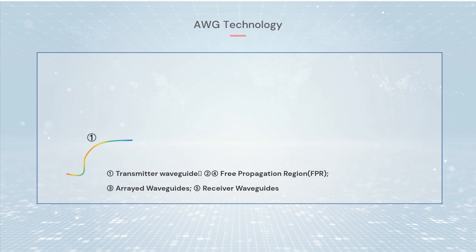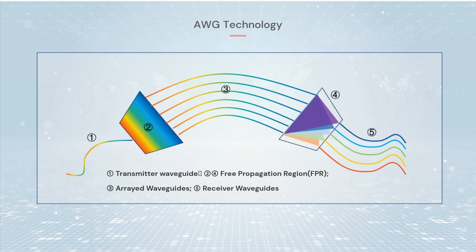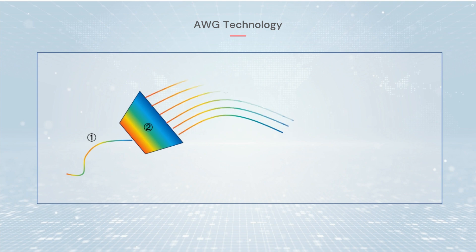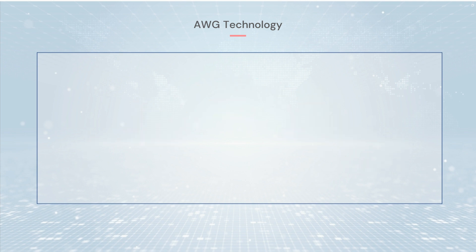AWG is an arrayed waveguide grating fabricated on a chip substrate using PLC technology, through a planar wavefront beam splitter on an optical fiber to multiplex and separate optical signals of different wavelengths. The signals emit from the transmitter waveguide and are separated into the arrayed waveguides after free propagation. The arrayed waveguides generate phase differences between the multiple optical beams, and different wavelengths are dispersed and then focused at different positions in the output free propagation region, thus realizing parallel demultiplexing of DWDM signals.